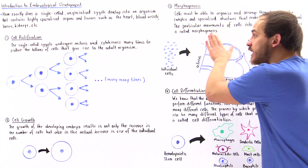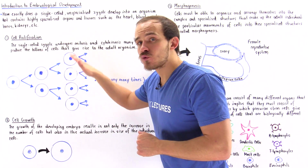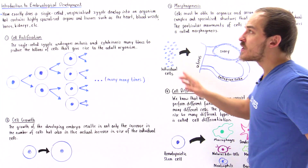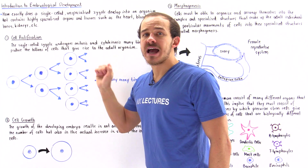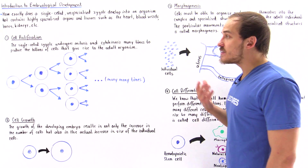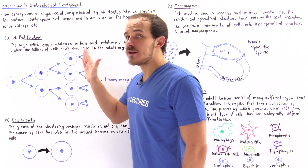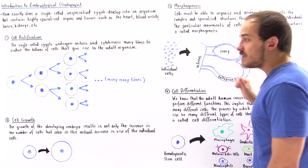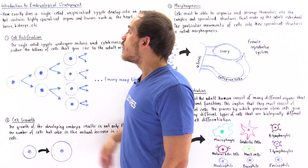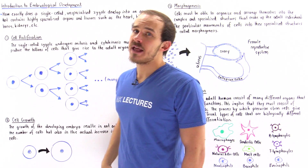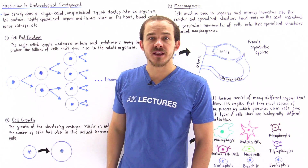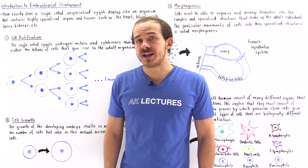We need all four processes — cell proliferation, cell growth, morphogenesis, and cell differentiation — for embryological development to actually take place. In the next several lectures, as we continue our discussion on embryological development, let's keep these four processes in mind, because they must work together on a continual basis for that zygote to eventually develop into the human organism containing highly specialized organs, tissues, and systems that carry out specific functions and allow the organism to live and survive.